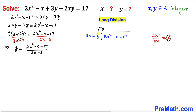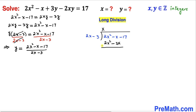Now let's multiply x by the two terms of the divisor, giving us 2x squared minus 3x. We subtract — changing signs — so the 2x squared terms cancel, and we get 2x. We bring down the negative 17.